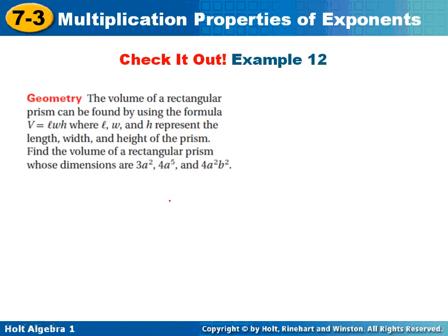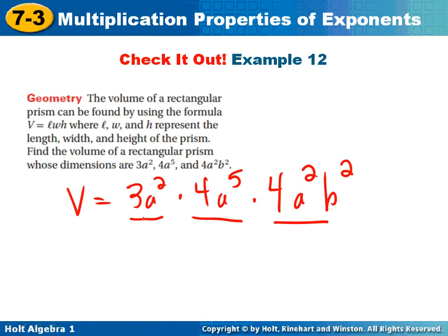Number 12. Volume is length times width times height, so I've got to take the three parts of the volume and multiply them together. So that's 3a to the 2nd, 4a to the 5th, and then 4a squared b to the 2nd. 3 times 4 is 12, 12 times 4 is 48. Add all the a's together, so that's 2, 7, 8, 9, and b to the 2nd on the end.